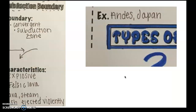The next type is called a subduction boundary. This happens at a convergent boundary or subduction zone. Subduction is where one of the plates goes down below the other; the one going below becomes part of that mantle material. It is very explosive, and it typically has felsic lava. The lava, steam, and ash eject violently. Some examples of where you can find this are the Andes mountains or Japan.